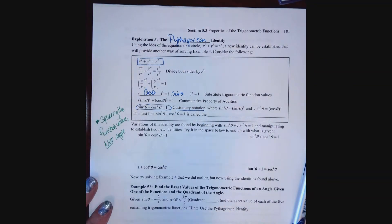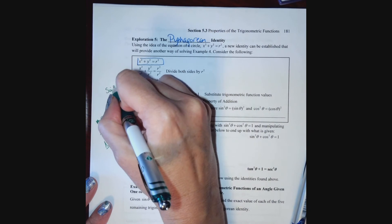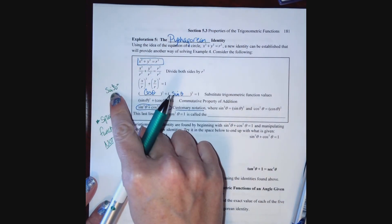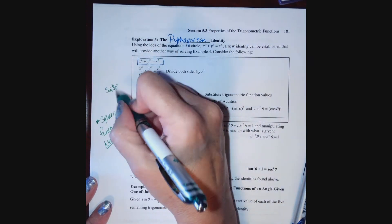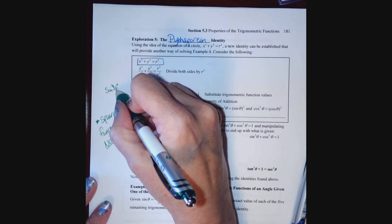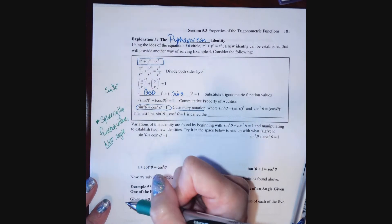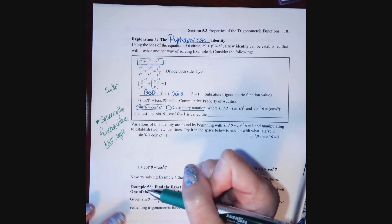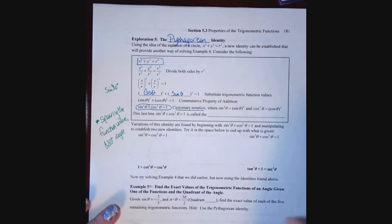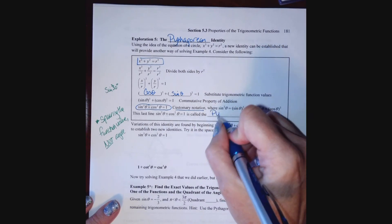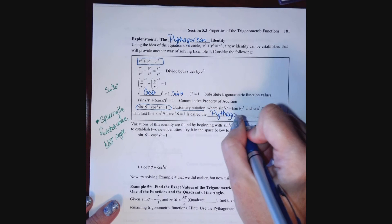For example, if I have sine of 30 degrees and I square that, I'm squaring the sine function value. I'm not squaring 30 degrees — I don't suddenly have the sine of 900 degrees. It's still the sine of 30 degrees, and then I square that value. This gives us sine squared theta plus cosine squared theta equals 1, our most basic Pythagorean identity.